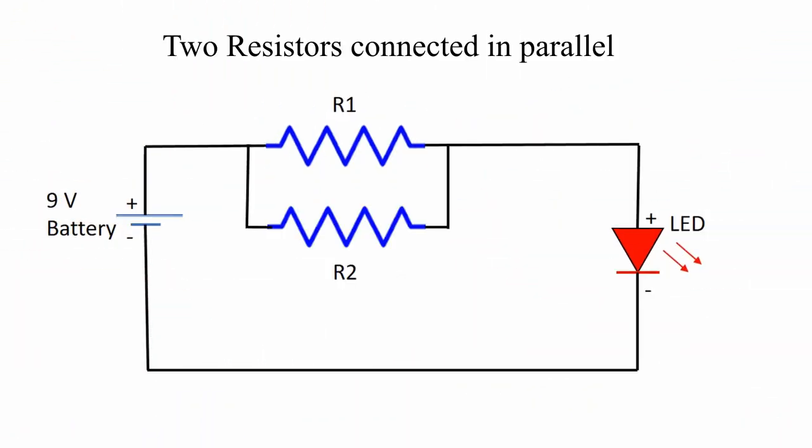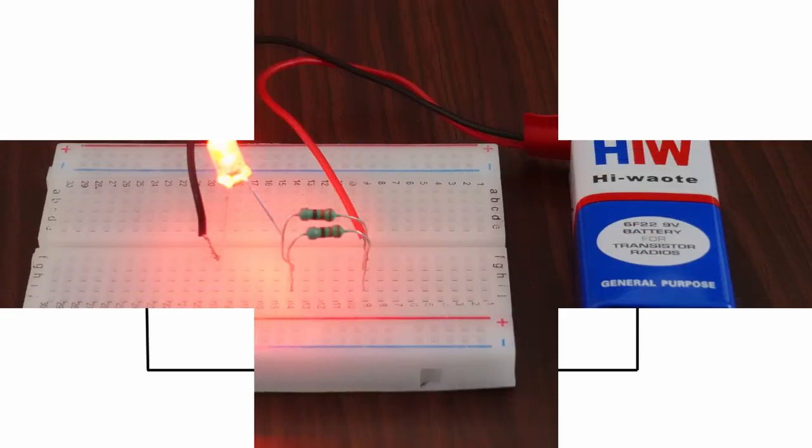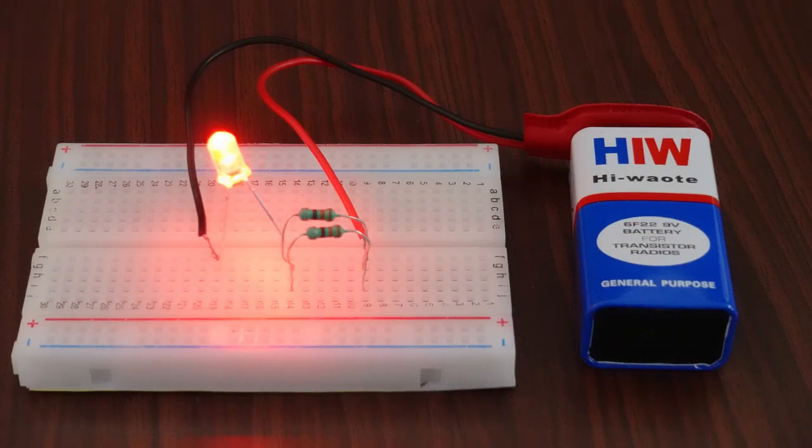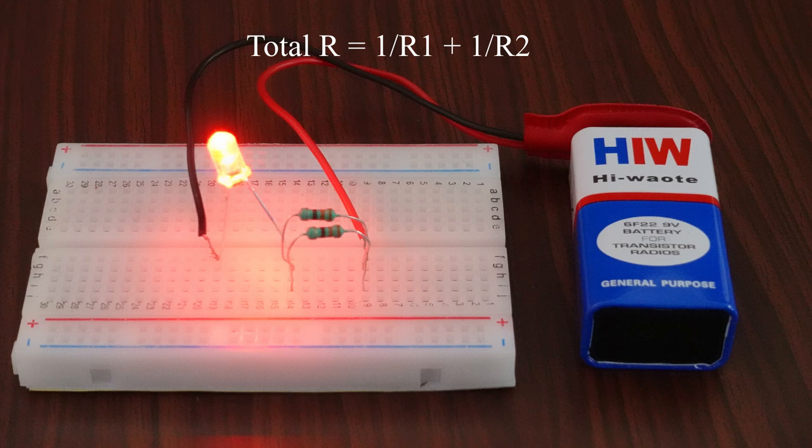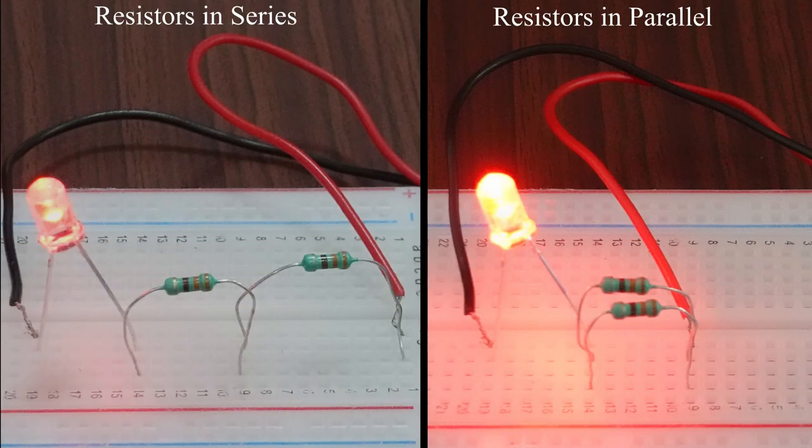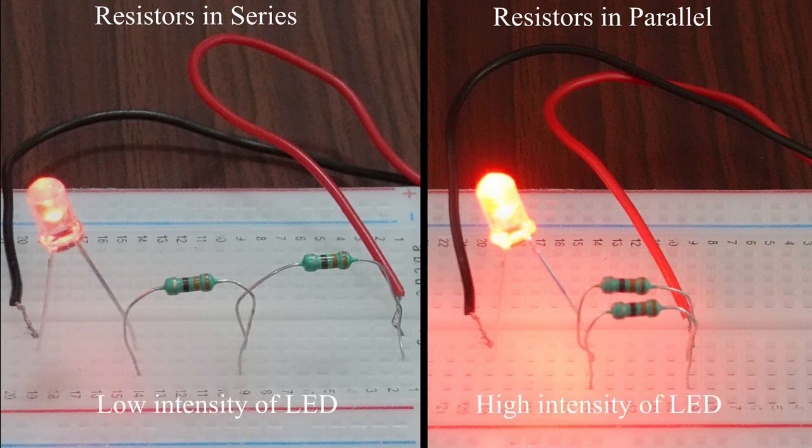If we connect two resistors in parallel, we see that the intensity of the LED is going to increase. The resistor value in parallel decreases, and as per Ohm's law, if the resistance decreases, current increases, so the light intensity of the LED increases.